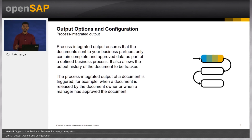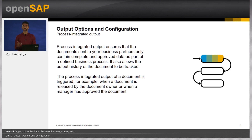Process integrated output ensures that the document sent to the business partners only contains complete and approved data as part of the defined business process. It also allows output history so that documents can be tracked. Process integrated output of a document can be triggered, for example, when a business document is released or approved by a document owner. This process depends heavily on the business process itself and how it is configured.